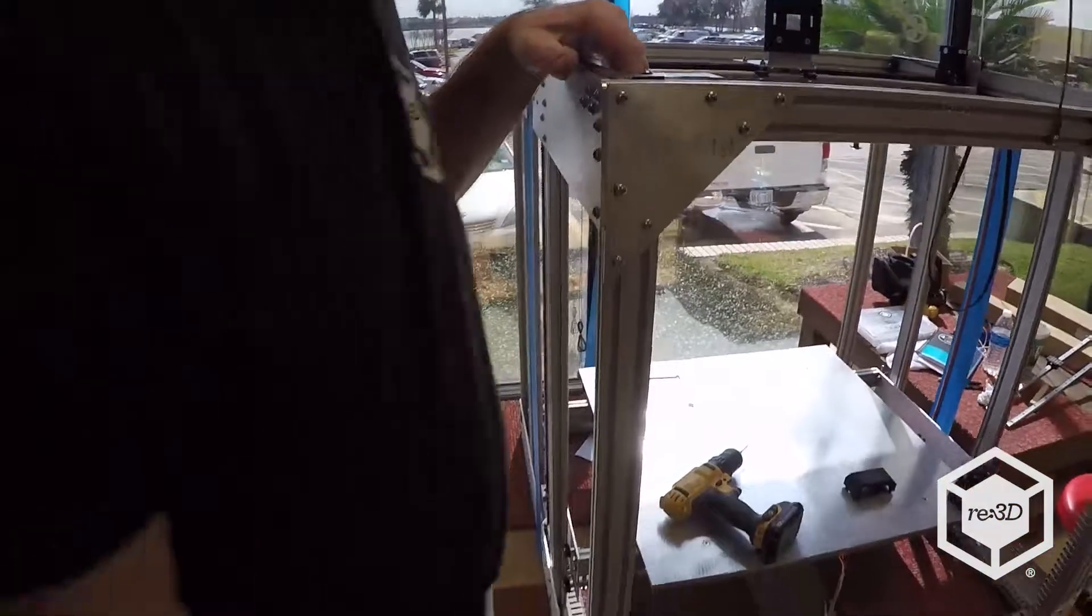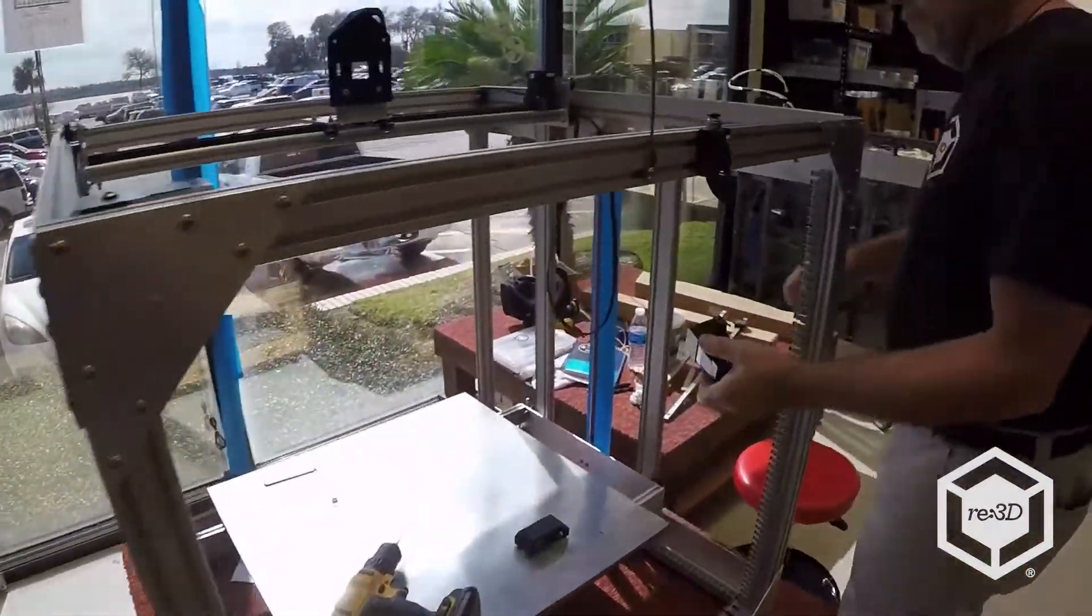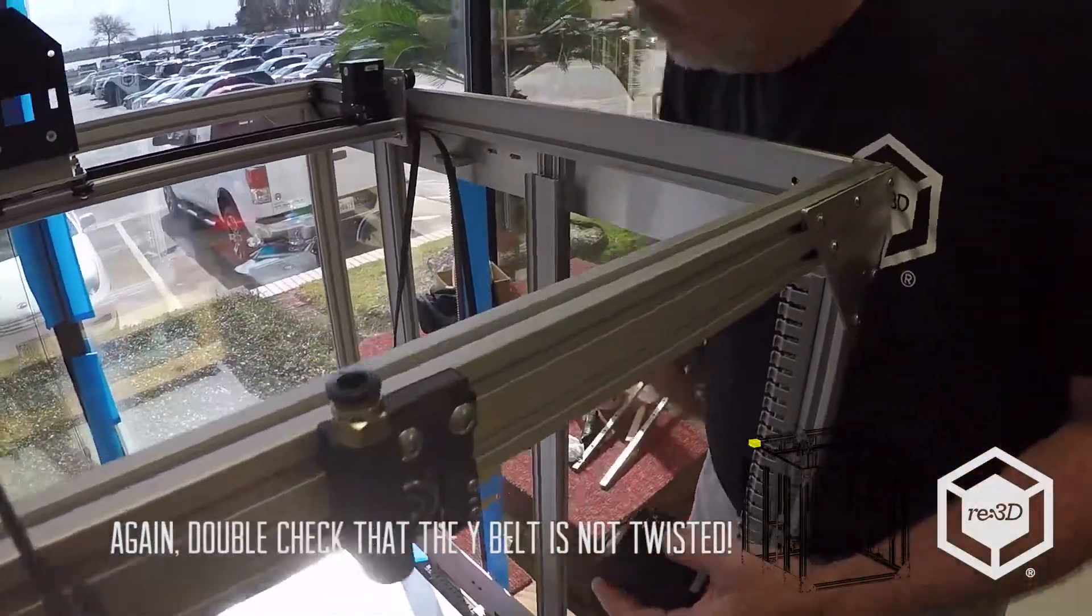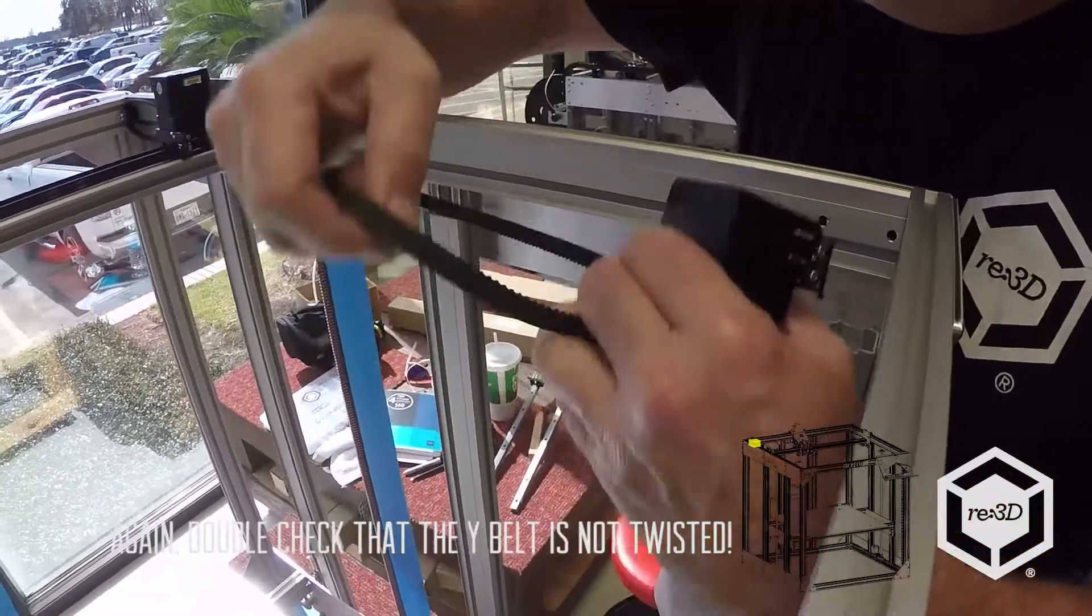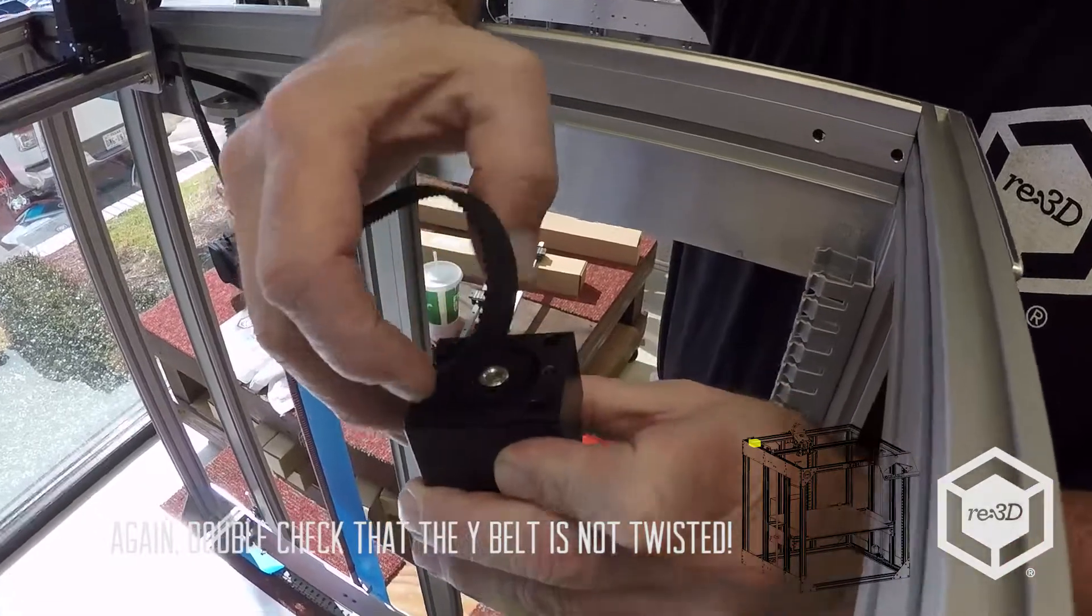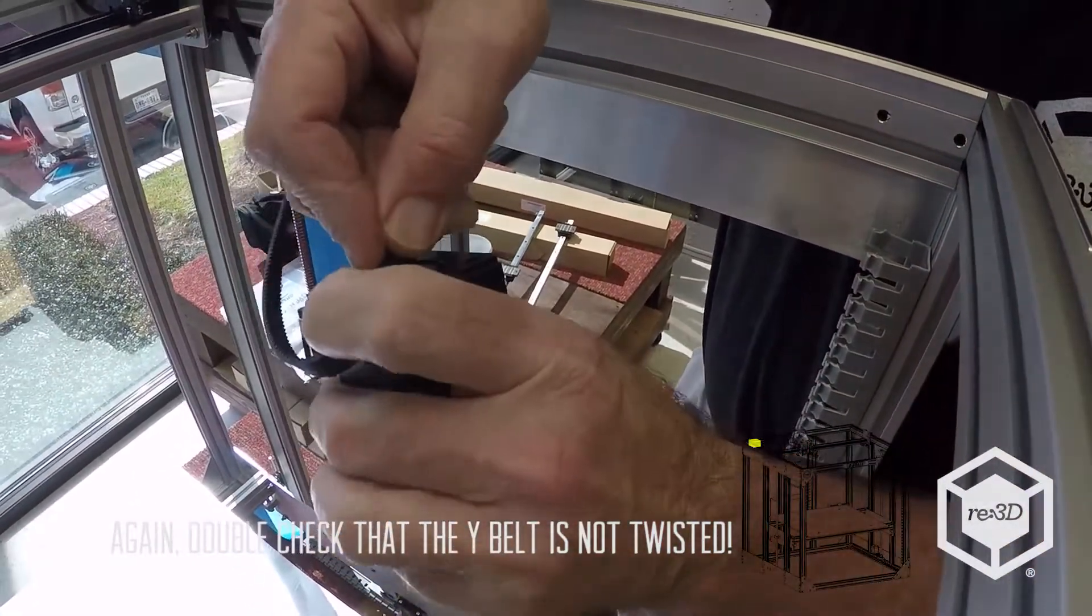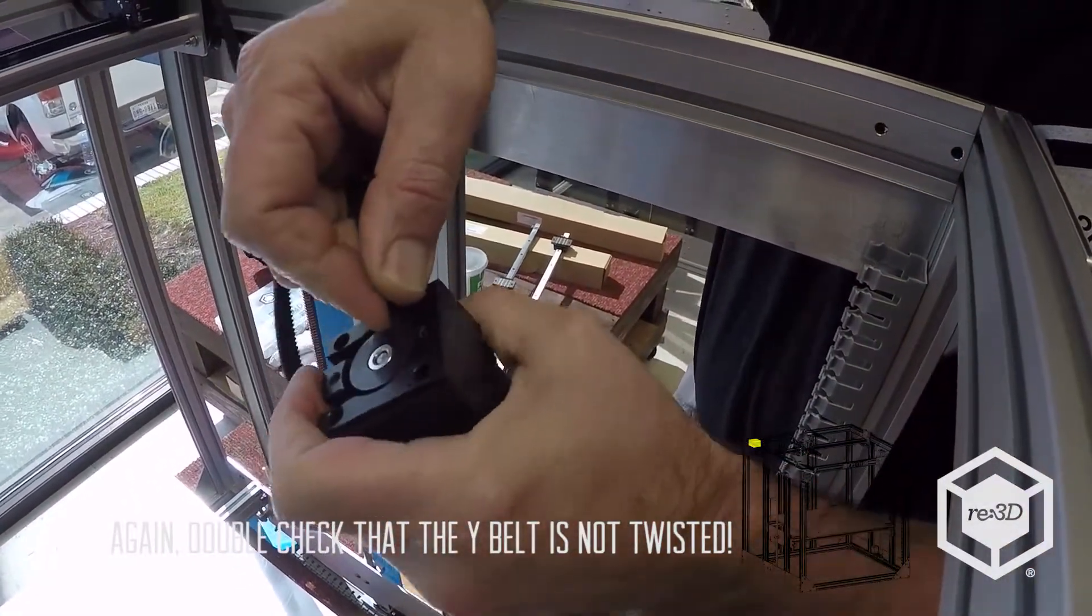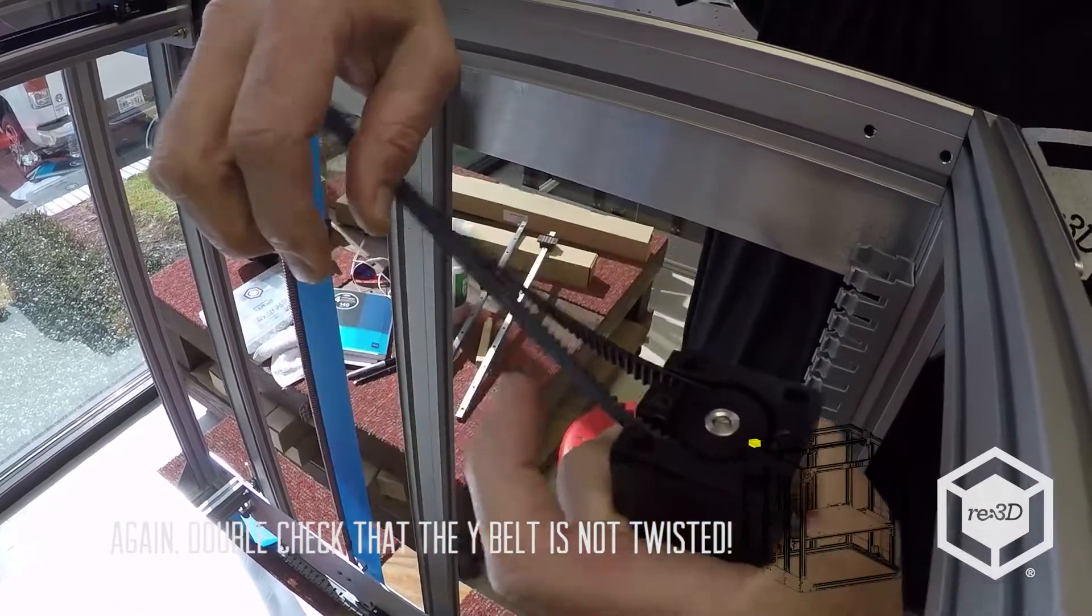Let's do the other side. So start the belt at an angle. Get it engaged into the pulley. And then just pull it around. Just like that.